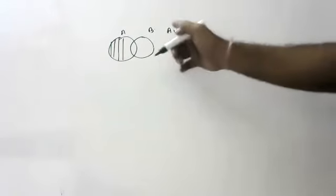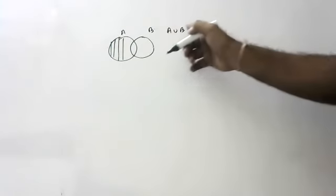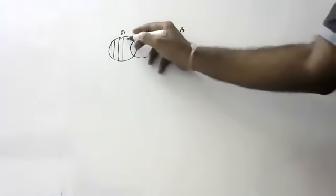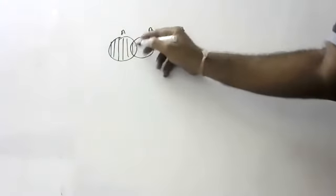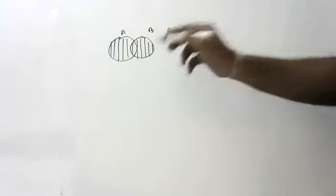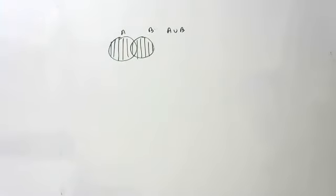Children, if someone asks you to shade A union B in Venn diagrams, how do you shade it? You will shade the entire thing. This is A union B children.